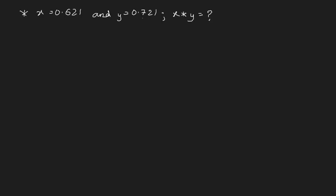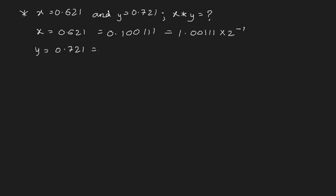Here's one example: 0.621 multiplied by 0.721 — what is the answer? Let's again convert into binary. 0.621 in decimal converts to 0.100111 in binary. Moving the decimal one place to the right gives 1.00111 × 2^(-1). Then Y = 0.721 equals 0.10111 in binary. Moving the decimal one place to the right gives 1.0111 × 2^(-1).